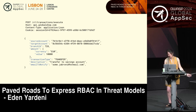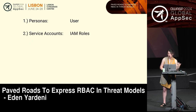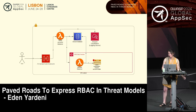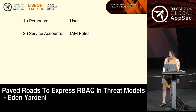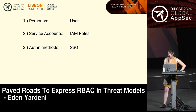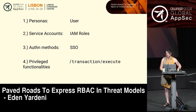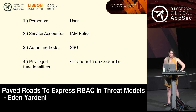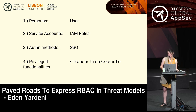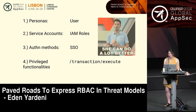We can enrich the information provided and get a lot more specific about who's executing this operation to find more interesting issues. From an access control standpoint, what do we know so far? The persona is 'user' — the stick figure. Maybe services authenticate with an IAM role, and the user authenticates to our platform with SSO. When I ask what the privileged functionalities are, somebody says 'transaction execute.' But that doesn't get us much closer to interesting insights based on the different kinds of users. So can we do better? I think so. This is where I'll talk about access maps — the titular paved road to express RBAC.